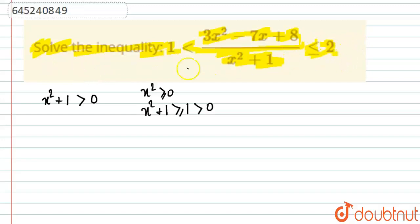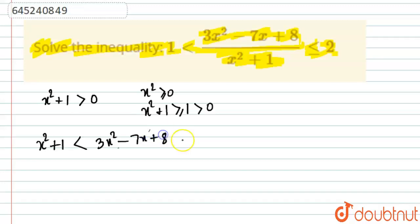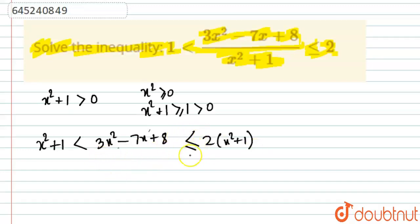Since x² + 1 > 0, we multiply it throughout. The left part becomes x² + 1, which is less than 3x² - 7x + 8, and the right part is less than or equal to 2(x² + 1). The x² + 1 in the denominator cancels, giving us our simplified compound inequality.